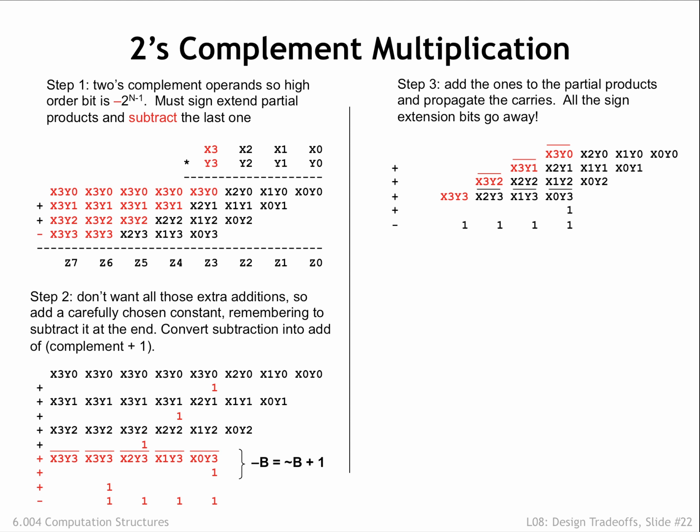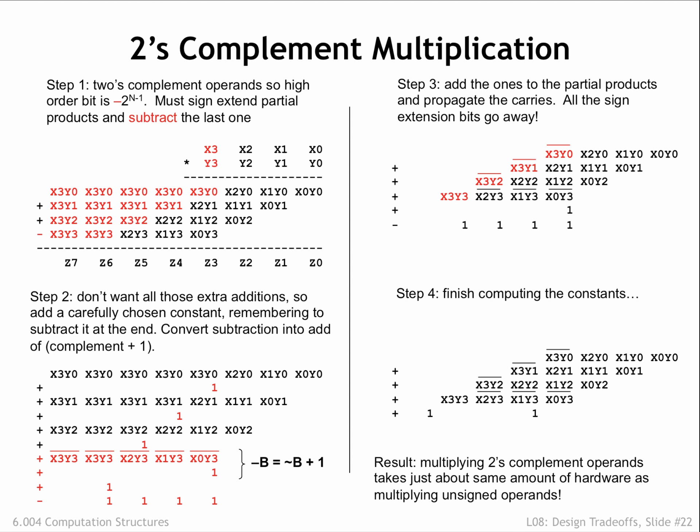We do the same for all the other sign-extended partial products, leaving us with the results shown here. In the final step, we do a bit of arithmetic on the remaining constants to end up with this table of work to be done.